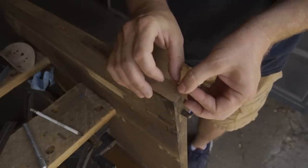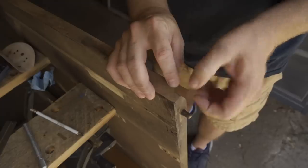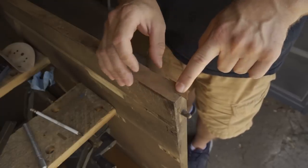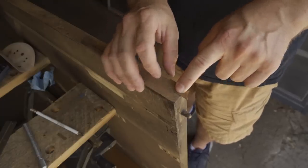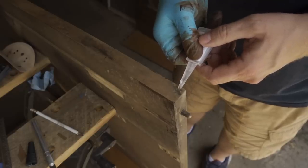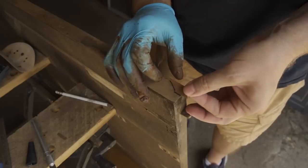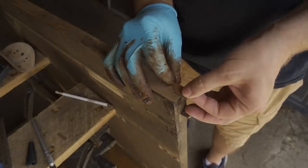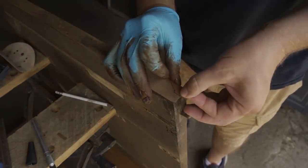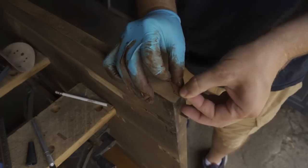And I'm doing this work before I remove the old finish because I knew I'd probably get some glue squeeze out. And doing it this way, that glue squeeze out would just get onto the old finish, which I'm going to remove anyway, as opposed to getting onto nice, clean, stripped wood.